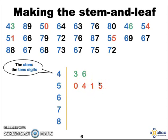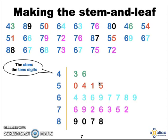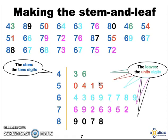Can you complete the stem and leaf plot? The 60s, the 70s, and the 80s. Those are the leaves of your plot, the units digits.